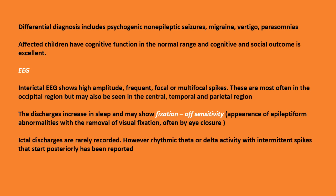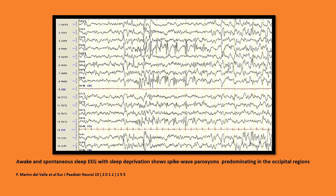Ictal discharges are rarely recorded. However, rhythmic theta or delta activity with intermittent spikes starting posteriorly have been reported. This figure shows EEG of a patient with this condition — awake and spontaneous sleep EEG with sleep deprivation — showing spike and wave paroxysms predominating in the occipital regions.